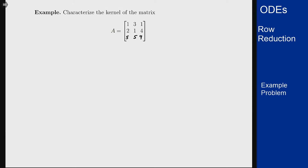In this example we want to characterize the kernel of a matrix using the row reduction method. Here we have the matrix 1 3 1, 2 1 4, 5 5 9. To characterize it, we want to do row reduction on this matrix and see what comes out.